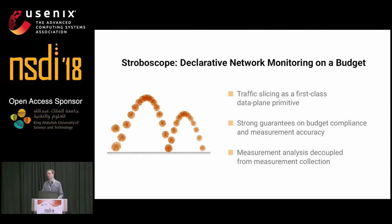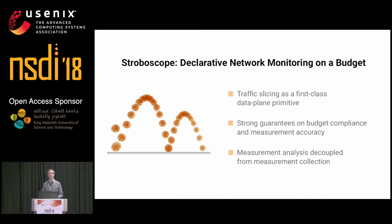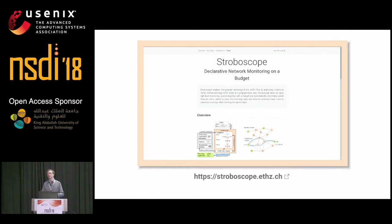To summarize in three points: first, we use a new data plane primitive for network monitoring — traffic slicing — the ability to capture small bursts of packets in a deterministic fashion. Second, we developed a provably correct algorithmic pipeline giving strong guarantees on both measurement accuracy and runtime budget compliance. Third, because we decouple measurement analysis from collection — we just get data out of the network — we are quite flexible as to what we want to measure. We have a small website introducing the system, the code is available on GitHub, and we'll be pushing more examples and labs over the coming weeks.